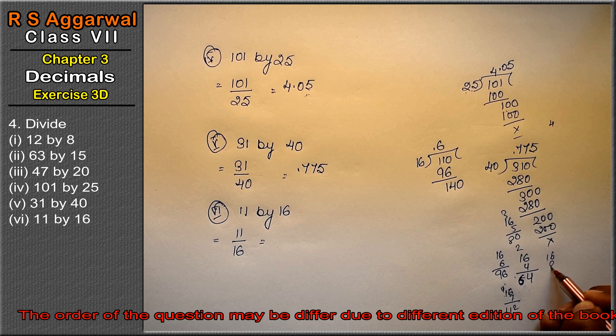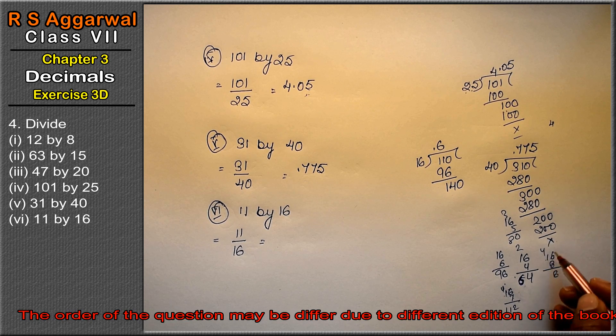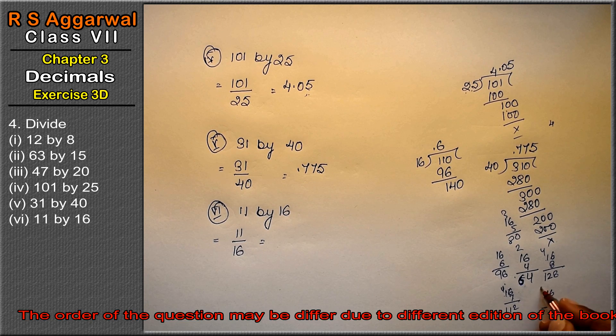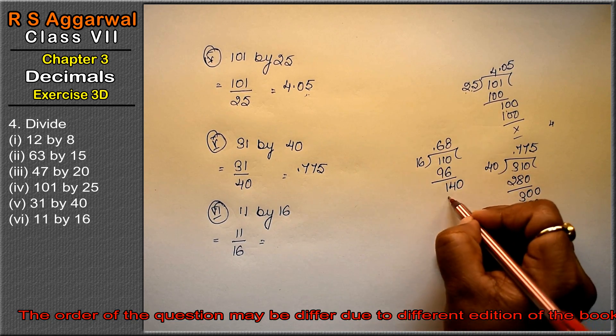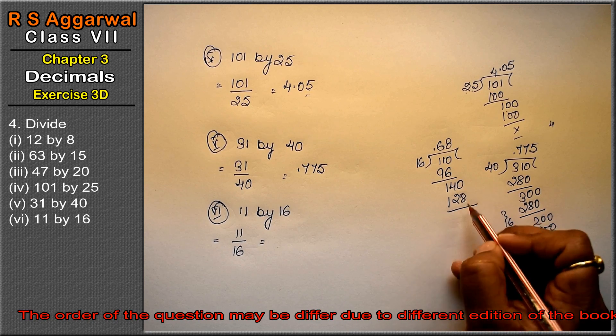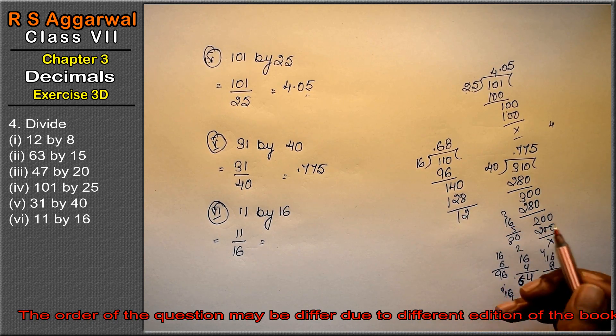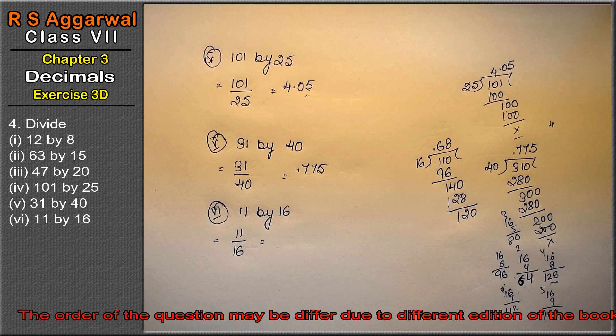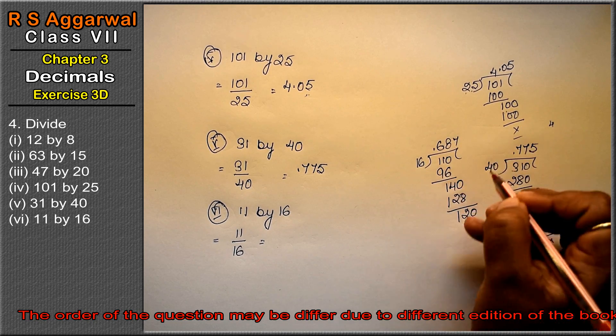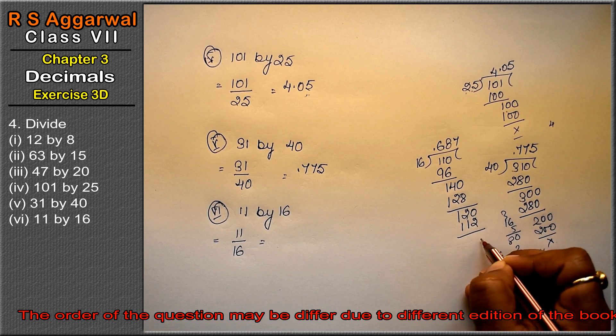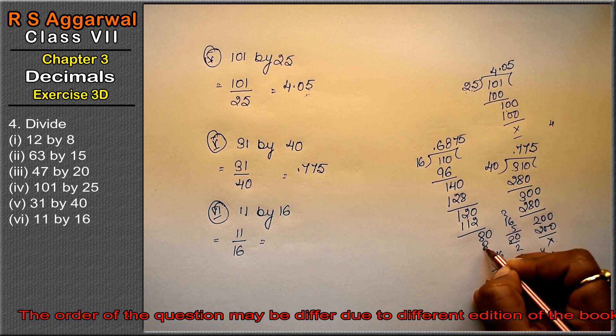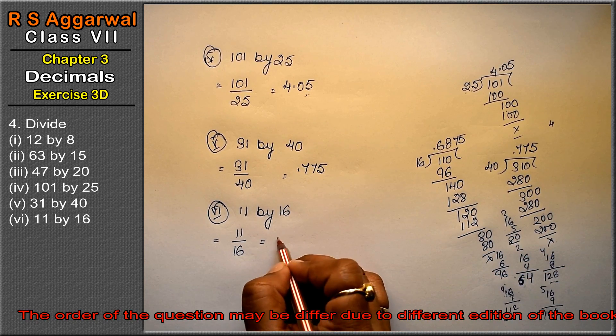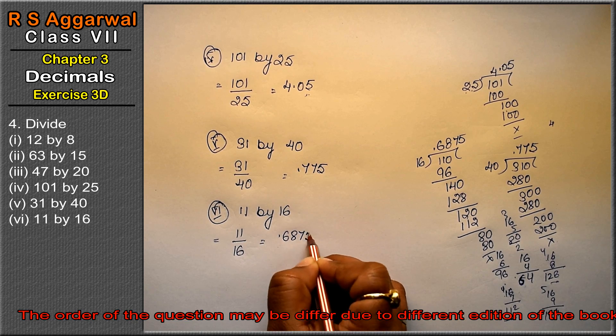16 goes into 140... 16×8 is 128. Subtracting: 140 minus 128 is 12. Adding zero to get 120. 16×7 is 112. Subtracting: 120 minus 112 is 8. Adding zero to get 80. 16×5 is 80 exactly. So the answer is 0.6875.